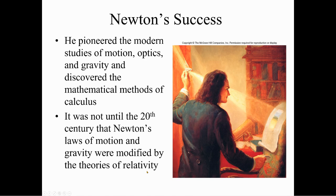It was not until the 20th century that Newton's laws of motion and gravity were modified by the theories of relativity. What that means is his laws didn't change, but they were explained through the theories of relativity. Even though Newton could calculate all this, he couldn't explain what gravity was — and the theories of relativity helped to explain that.